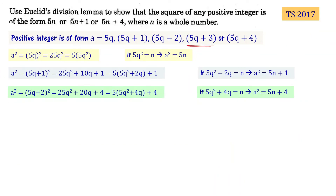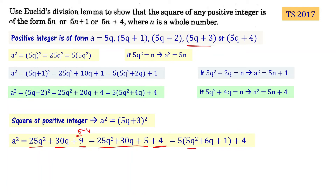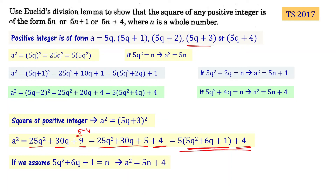Now let's consider a equals 5q plus 3. a squared equals 5q plus 3 whole squared, which gives 25q squared plus 30q plus 9. Writing 9 as 5 plus 4, I can take 5 as common: 5 times 5q squared plus 6q plus 1 plus 4. Assuming 5q squared plus 6q plus 1 equals n, then a squared equals 5n plus 4.